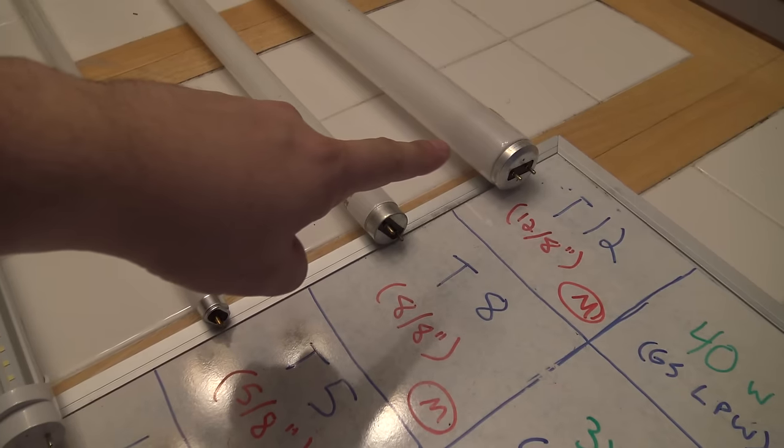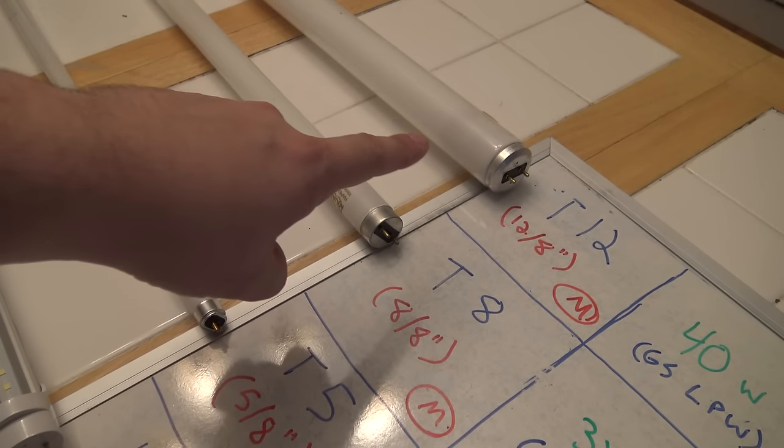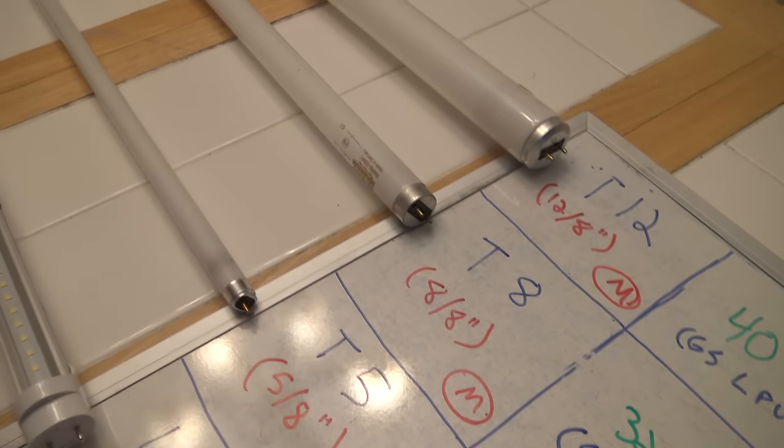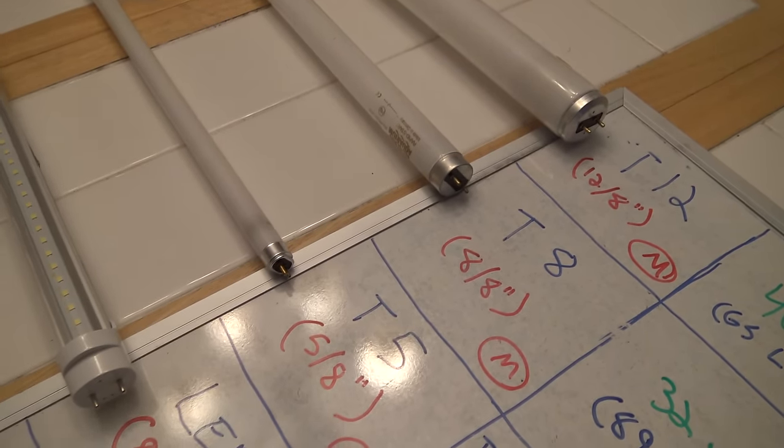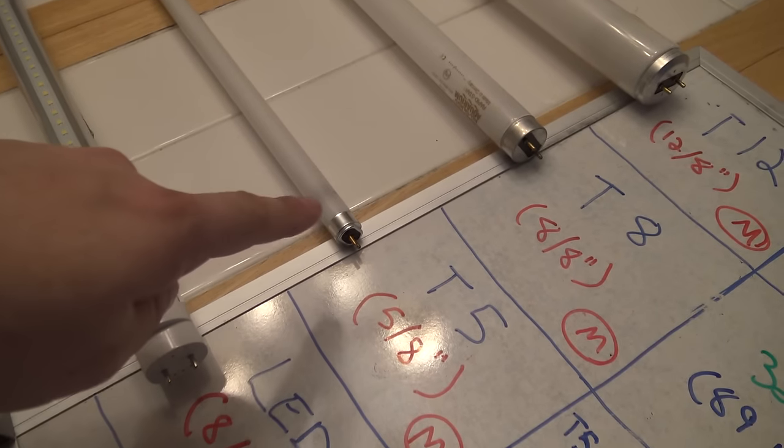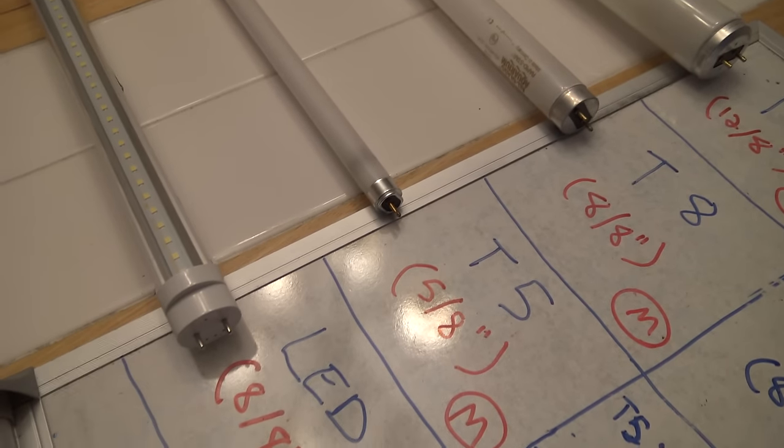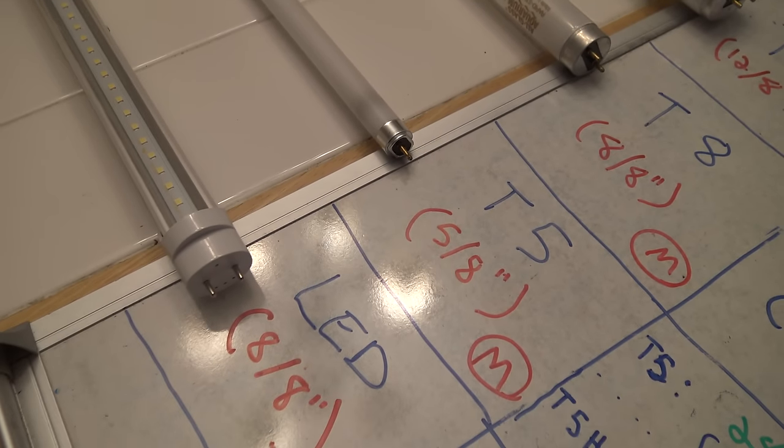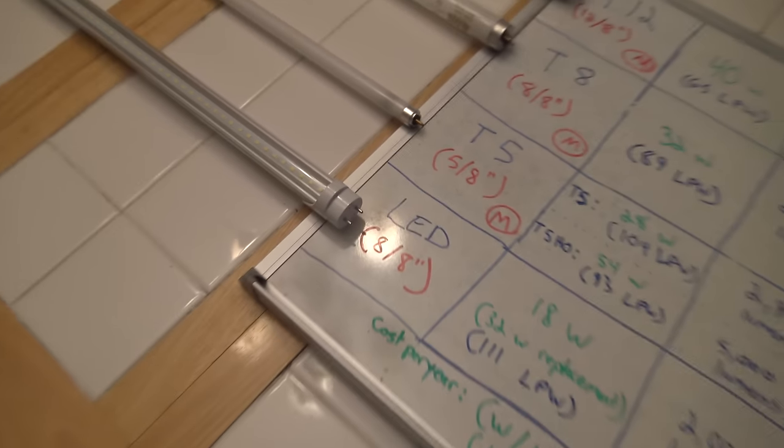T12s are obviously the oldest type of bulb. I don't even think they make them anymore. T8s are pretty common, especially if they were installed within the last five years or so. And anyone that's growing plants, especially indoors, is probably utilizing T5s at this point.